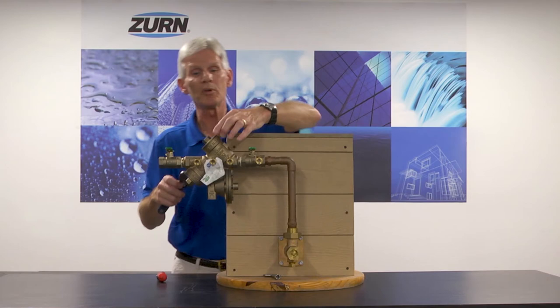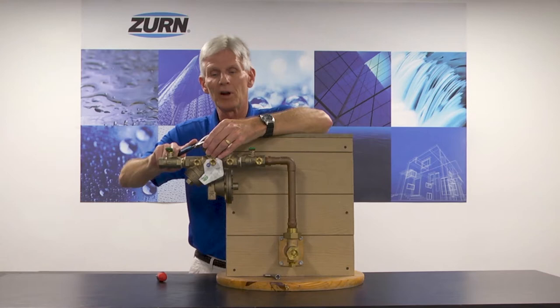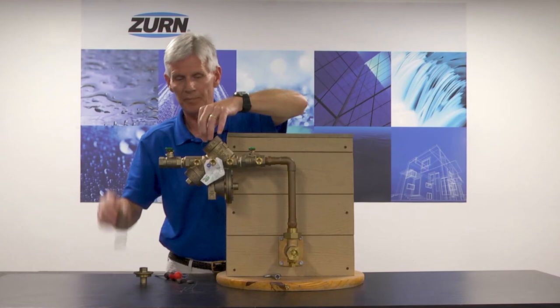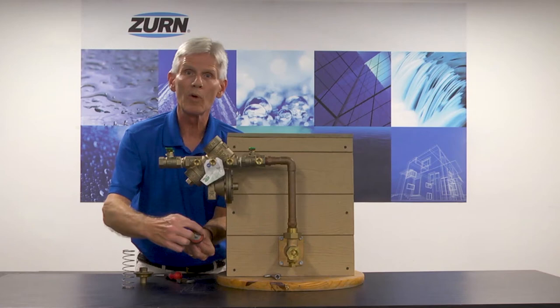Once we've got the test cocks open and the pressure has bled, the next step is to simply remove the number one poppet check cover, so this is the one pointing upward. Very straightforward, we loosen it up. We want to keep the palm of our hand over this cover because it is a spring-loaded cover. Once we get this cover off, inside we've got our spring and our black plastic poppet.